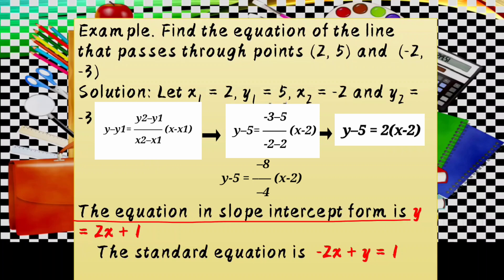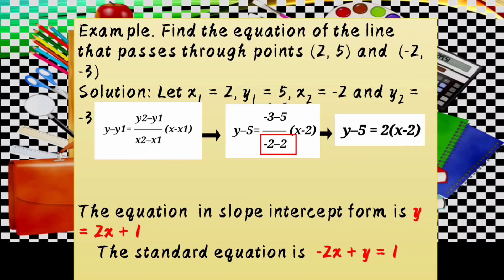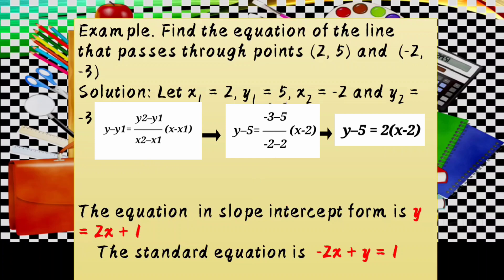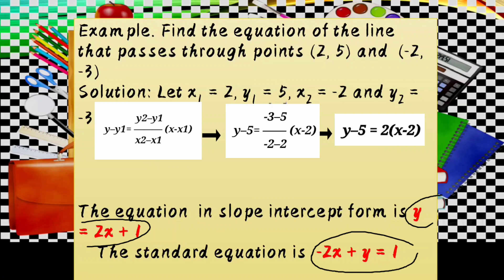Negative 8 divided by negative 4 is positive 2, because negative divided by negative is positive. So y minus 5 equals 2 times (x minus 2). To find the slope using the slope formula: (y₂ minus y₁) over (x₂ minus x₁) equals negative 8 over negative 4, which equals positive 2. The equation in slope-intercept form is y equals 2x plus 1. Converting to standard form: transpose positive 2x to the other side — negative 2x plus y equals 1.